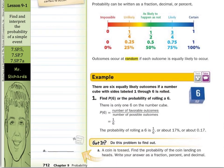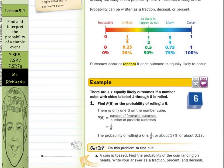So in our first guided example today, there are six equally likely outcomes if a number cube with sides labeled one through six is rolled. Find the probability of rolling a six — P(6) means the probability of rolling a six. Well, there's only one six on the number cube, so the number of favorable outcomes is one. The number of possible outcomes is six. So we write this as one over six, which can also be written as seventeen percent or zero point seventeen.